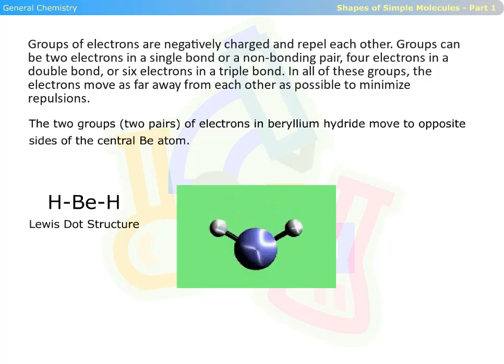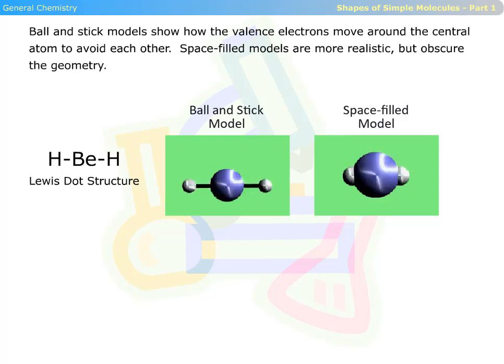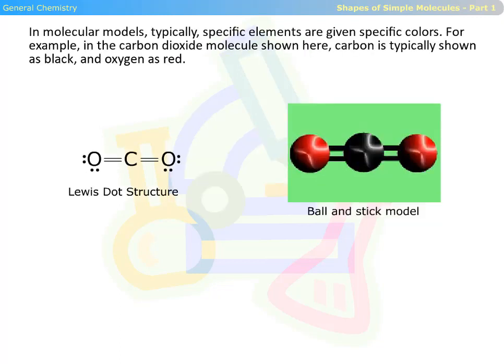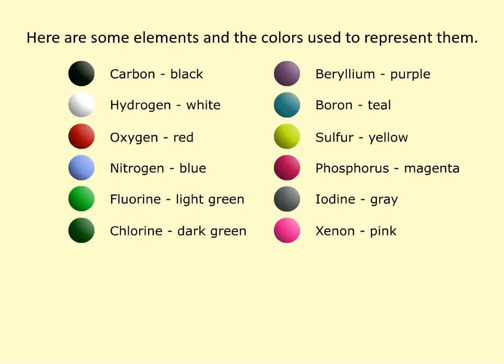The two groups of electrons in beryllium hydride move to opposite sides of the central beryllium atom. Ball and stick models show how the valence electrons move around the central atom to avoid each other. Space-filled models are more realistic but obscure the geometry. In molecular models, specific elements are given specific colors — for example, in carbon dioxide, carbon is typically shown as black and oxygen as red.